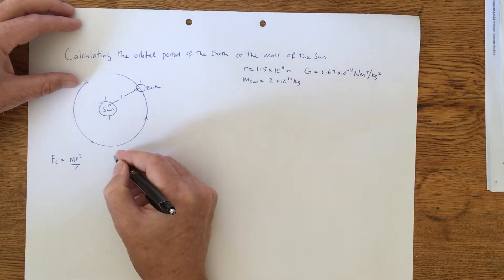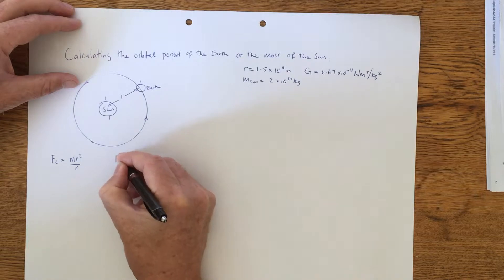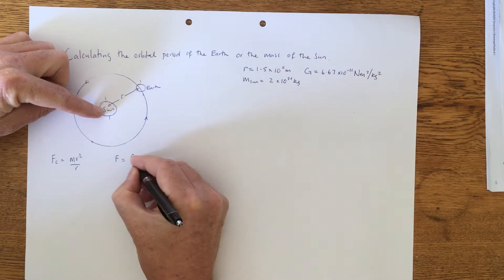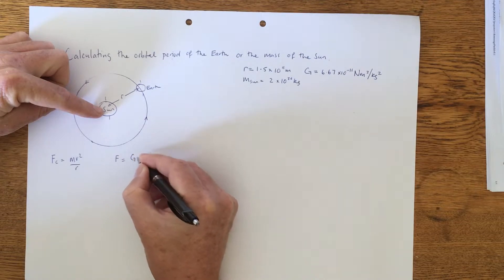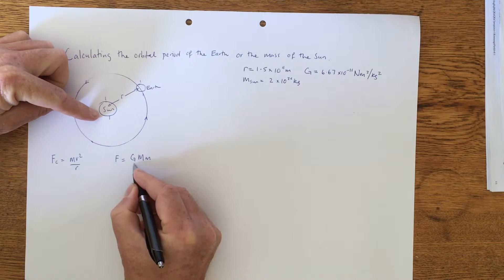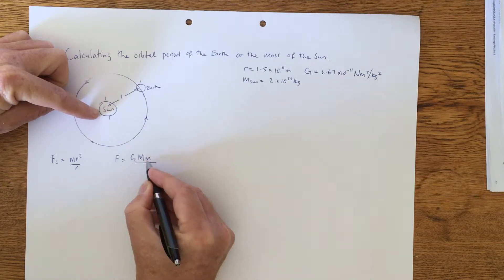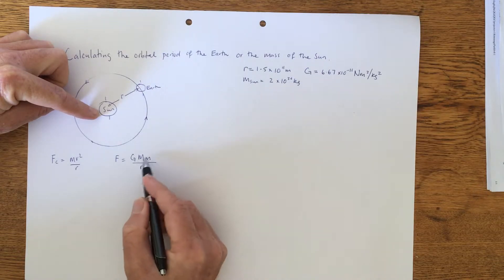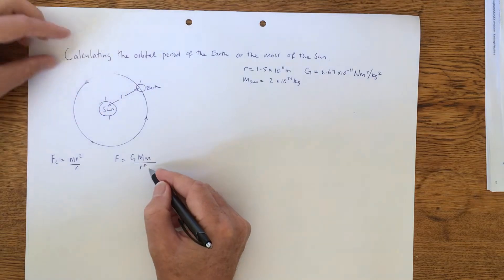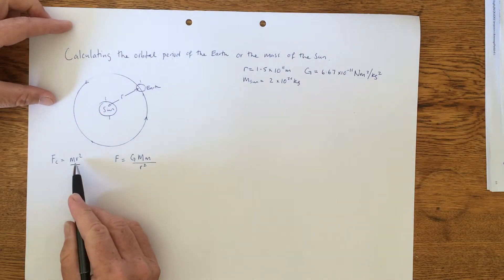We also know that the force on both the Sun and the Earth is to do with the universal gravitational constant, the mass of the Sun, the mass of the Earth, we'll call that big M for the Sun and little m for the Earth, divided by the radius between them, the distance between them, squared.